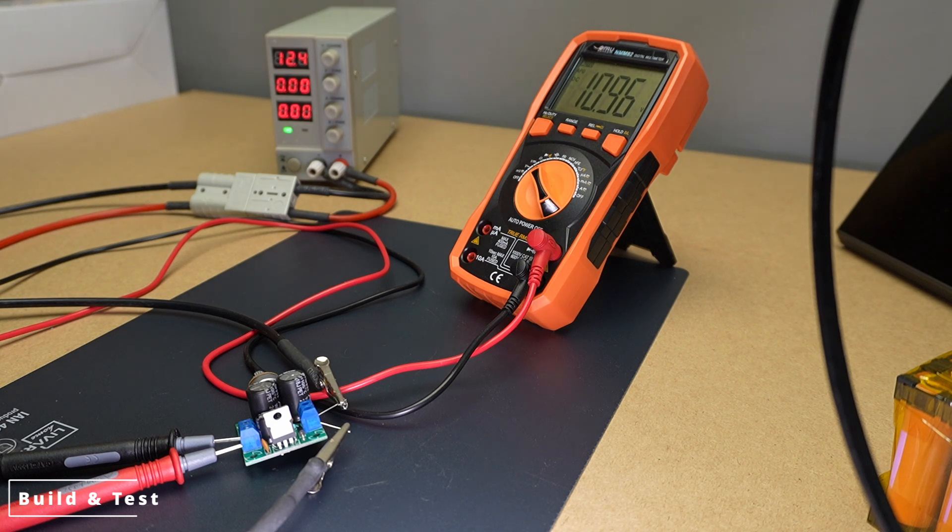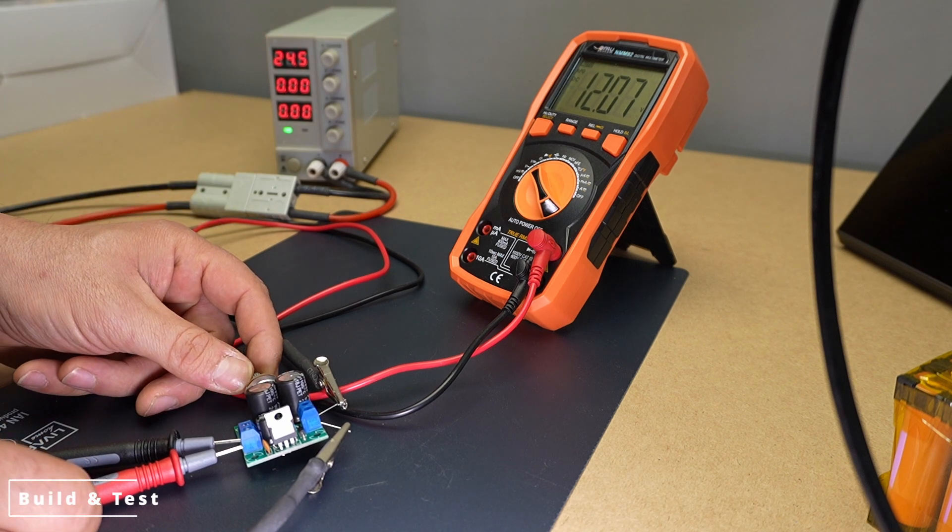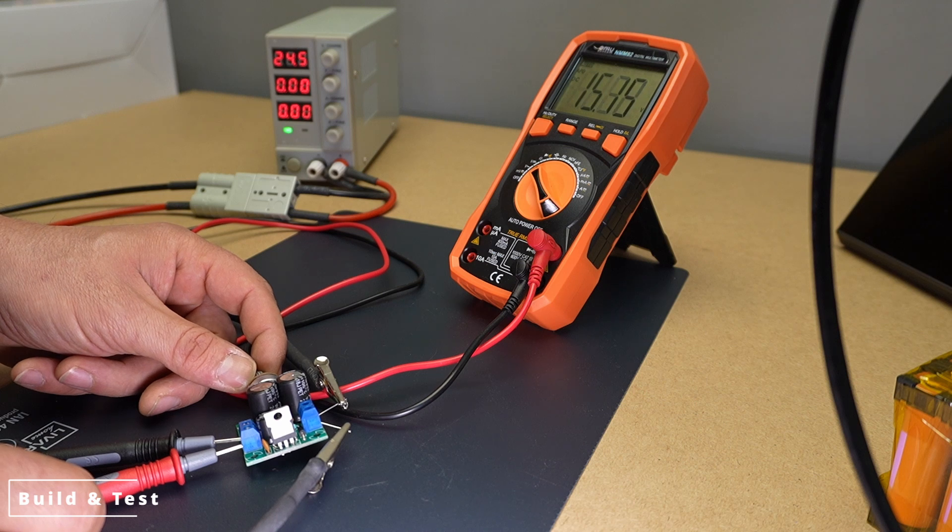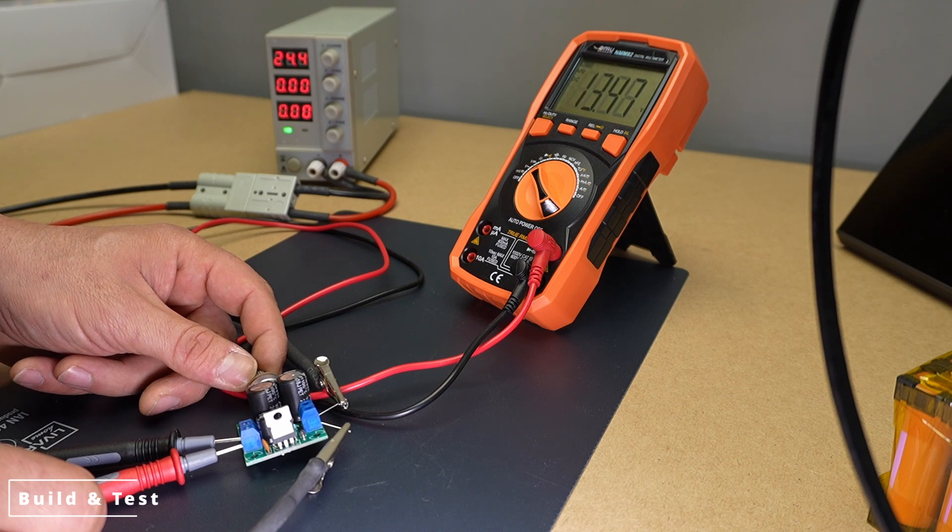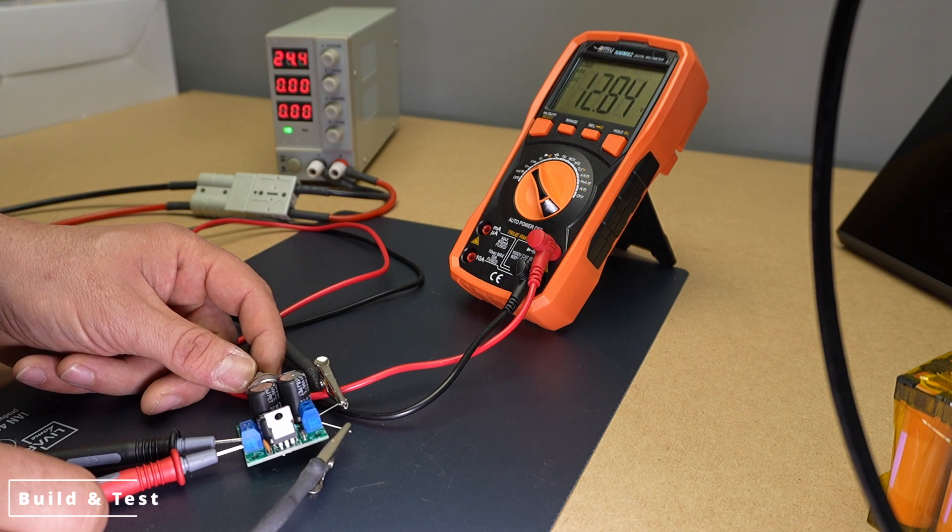Regulating the output voltage. Now, I'll adjust the potentiometer built into the circuit to regulate the output voltage. I'll closely monitor the values on the multimeter as I slowly turn the potentiometer. The aim is to confirm that the output voltage adjusts smoothly between the lower limit, e.g. 3 volts, and the upper limit, 24 volts. If the voltage fluctuates or fails to reach the desired values, it may indicate a problem that needs further investigation.